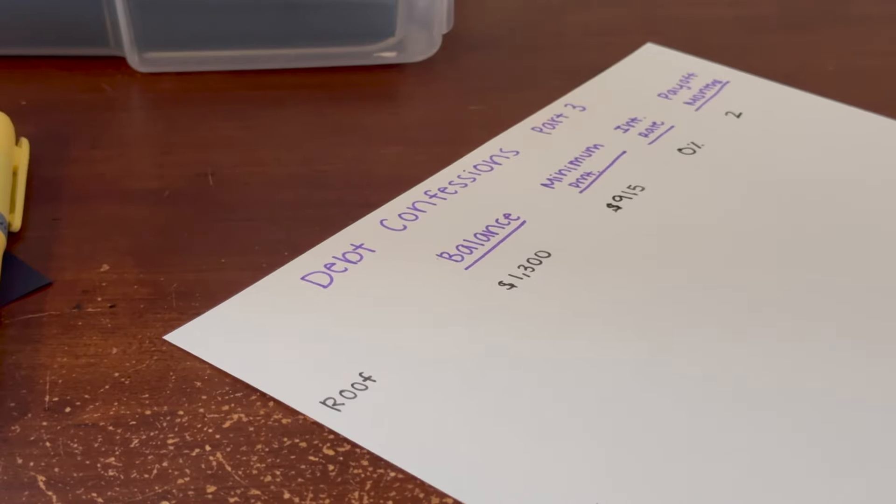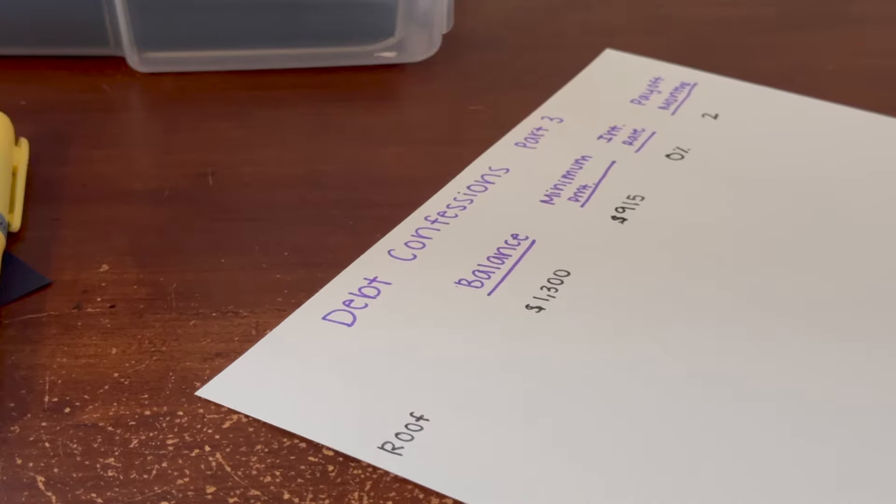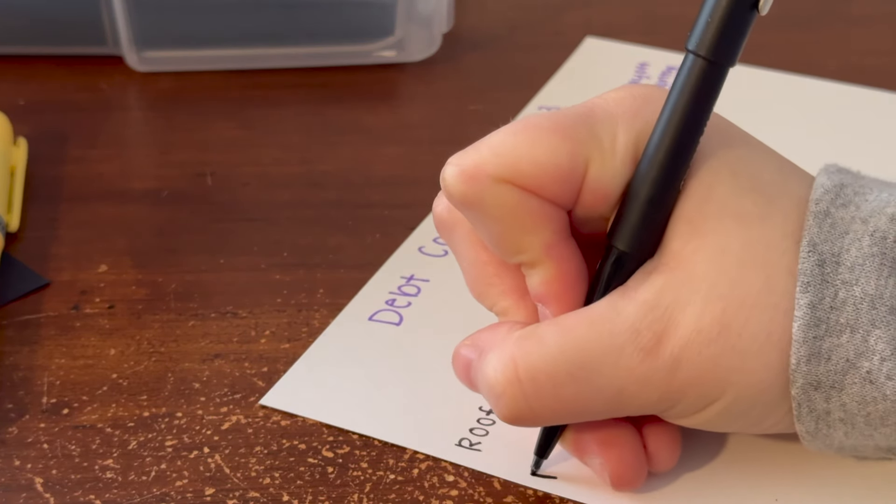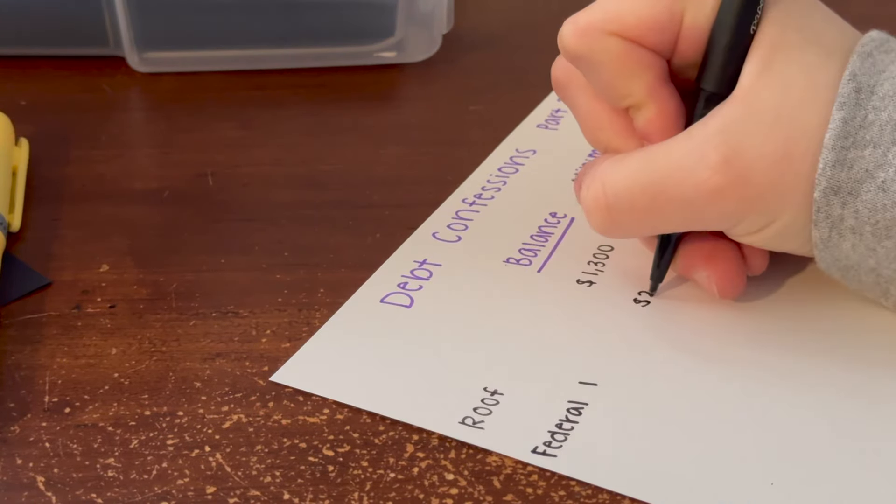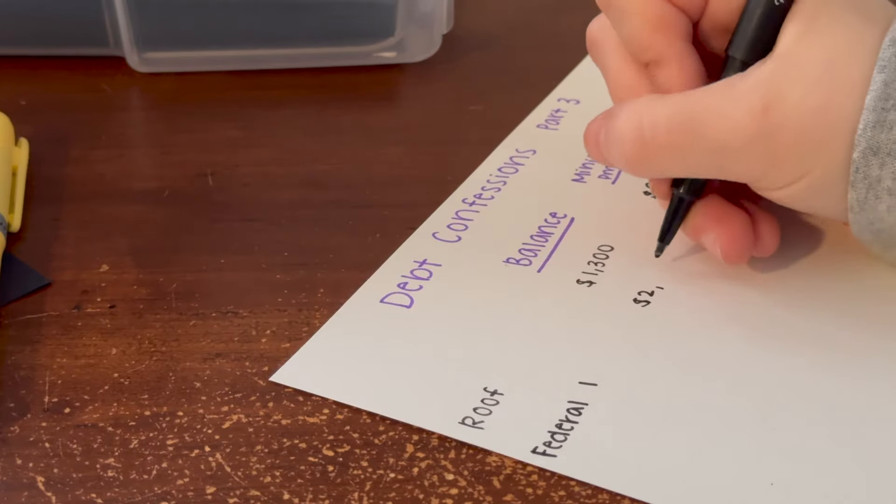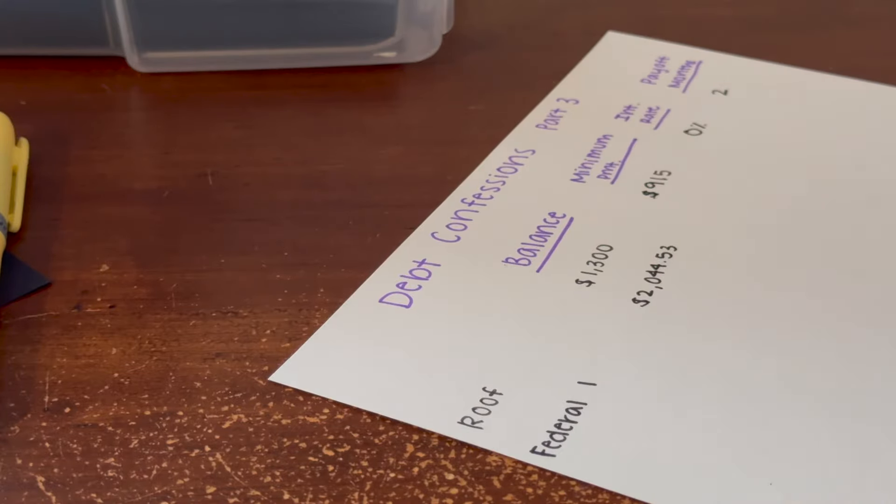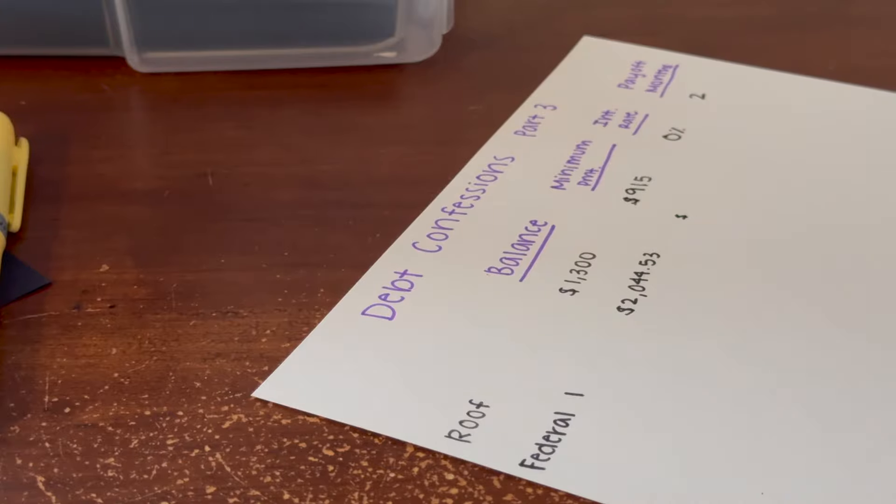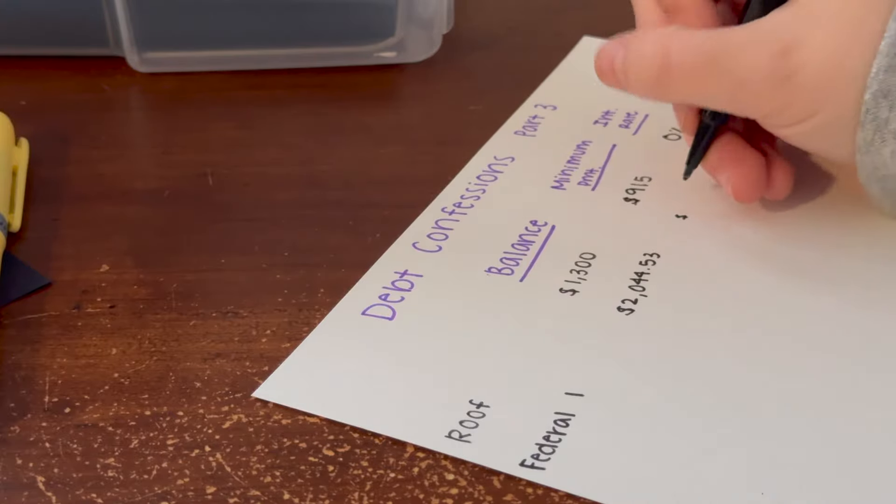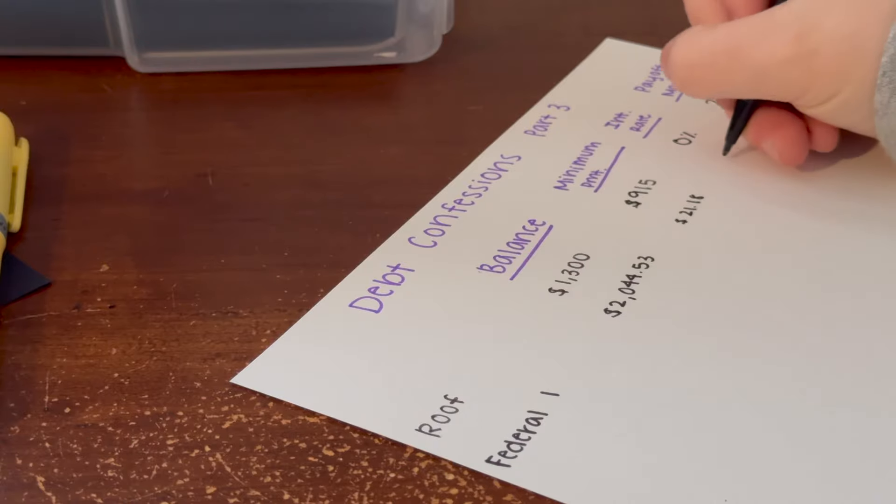I think in similar fashion we're also going to break out the federal loan because it's three different parts—I know, bad decisions, but it is what it is. We're going to put this as Federal 1. The balance on this one is $2,044.53. My federal is one lump sum payment, so the portion of my lump sum payment that goes to this one is $21.18. The interest rate is 4.53%.